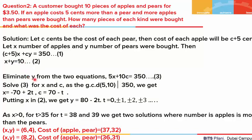We will next eliminate one of the variables. Here we have eliminated y, so we get the equation 5x + 10c = 350. We have no y here. We can divide the whole equation by 5 or solve it as it is. When we solve this for x and c, we can see it has a solution because the GCD of 5 and 10 divides the right hand side. We get x = −70 + 2t and c = 70 − t. If we put the x value into equation 2, we will get y. For different values of t starting from 0, ±1, ±2, we get infinite solutions.